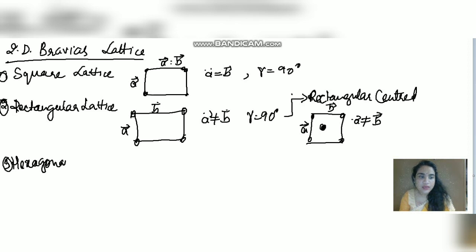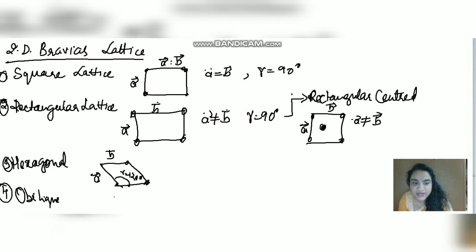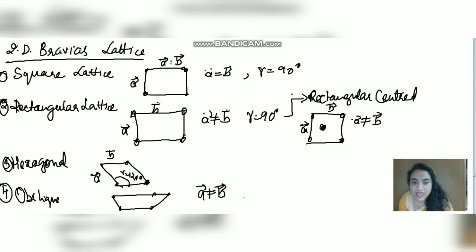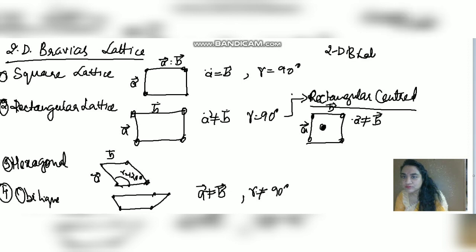The third 2D Bravais lattice is hexagonal, where the angle gamma = 120° and a = b. The fourth is oblique, the most general kind of lattice, where a ≠ b and gamma is not equal to 90°. Including the centered rectangular as the fifth, we get five types of 2D Bravais lattices in total.